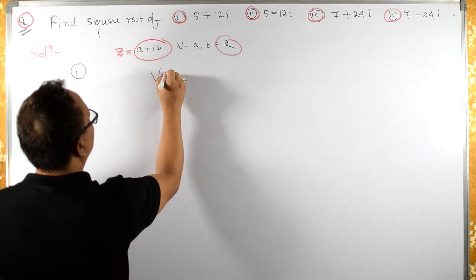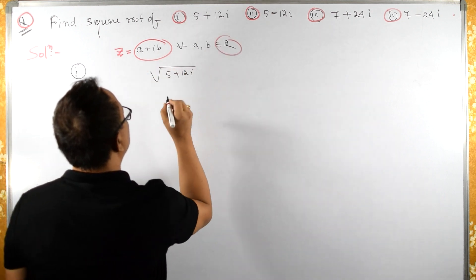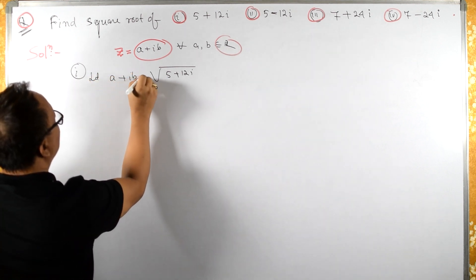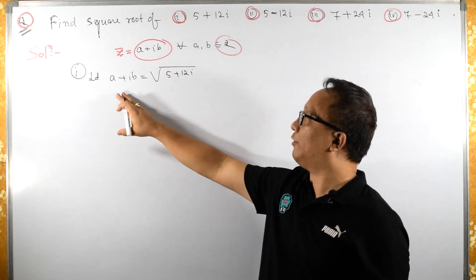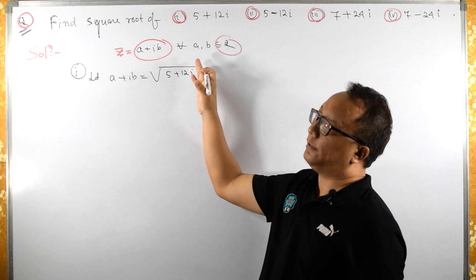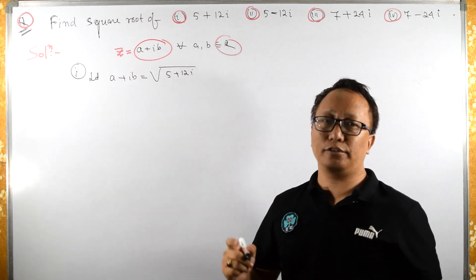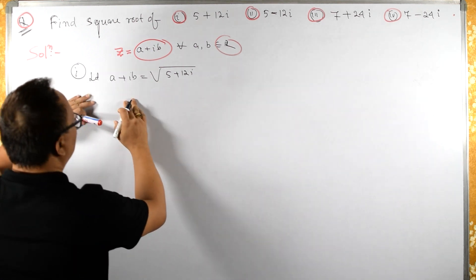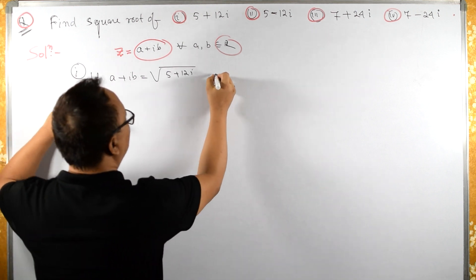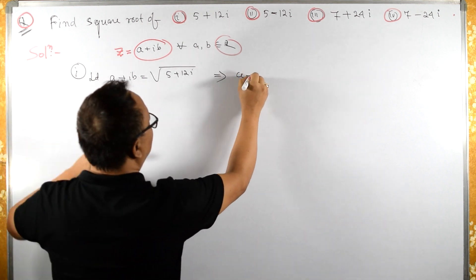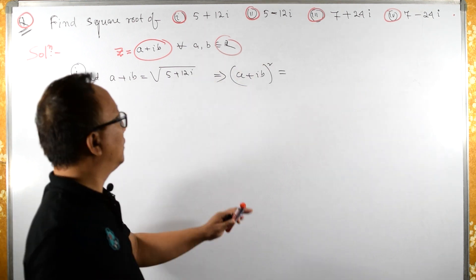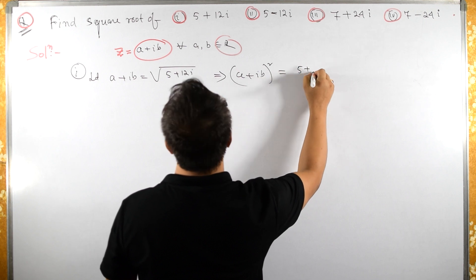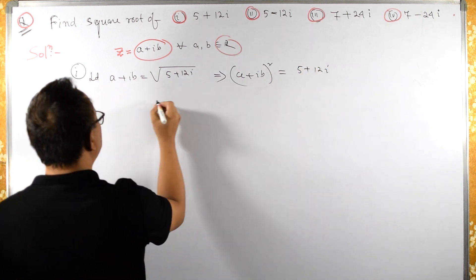Square root of 5 plus 12i — let us consider that a plus ib equals this. Now if we are able to find the value of a and b, then we are done. Keep in mind a and b should be real numbers. Now let us square both sides: squaring gives us (a plus ib) squared equals 5 plus 12i.